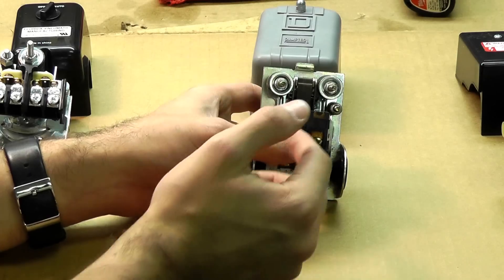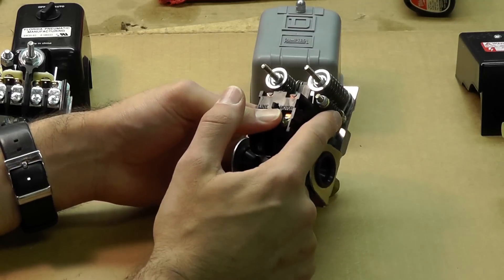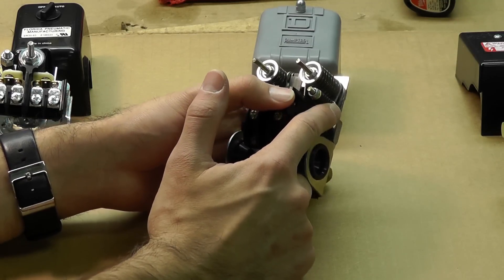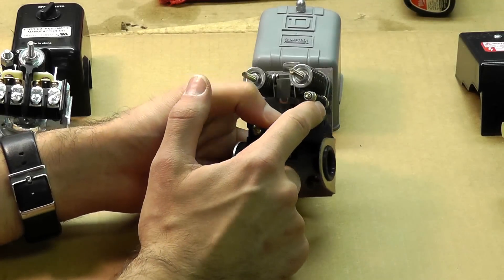Now this is the differential, which is the difference between the high-end pressure and the cut-in pressure. So if you do adjust this clockwise, it will turn and increase the high-end cutoff pressure. So it cuts off at 125.